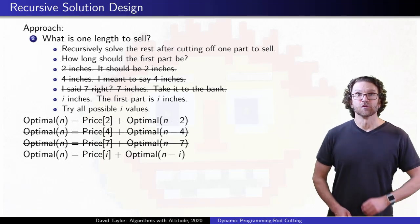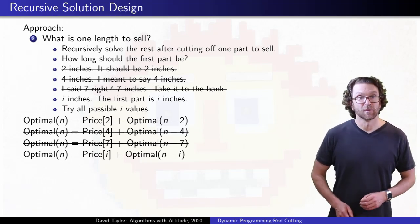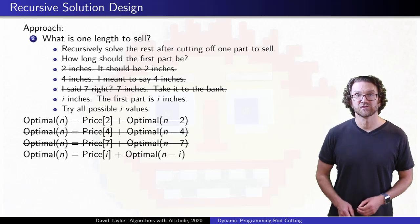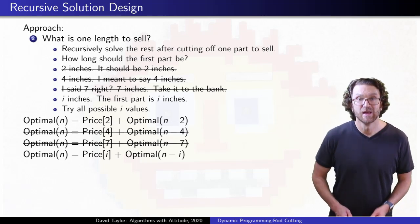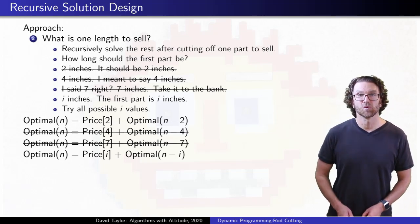Just try them all. For every value of i, from 1 up to n, figure out how much you could make by selling a rod of that length, and then recursively cutting up whatever is left over.